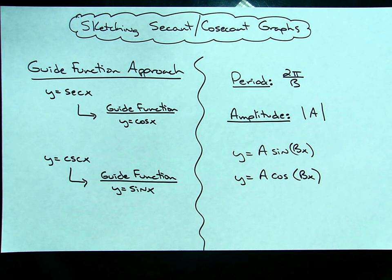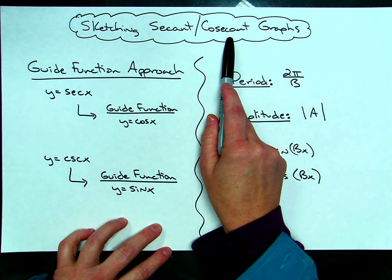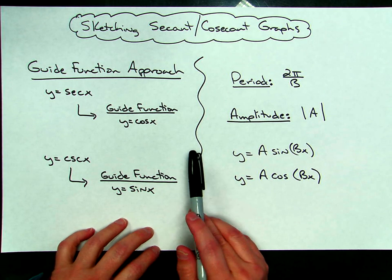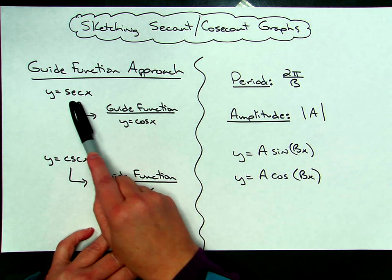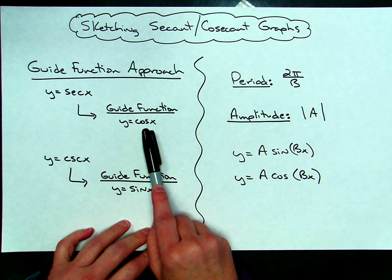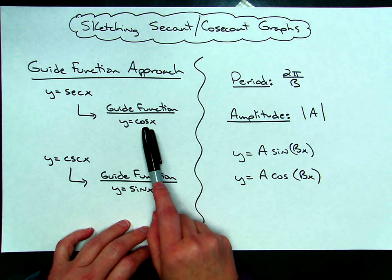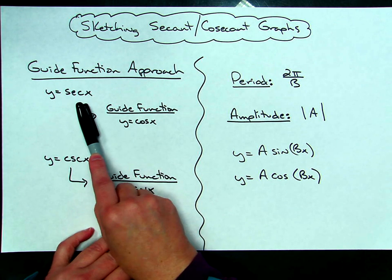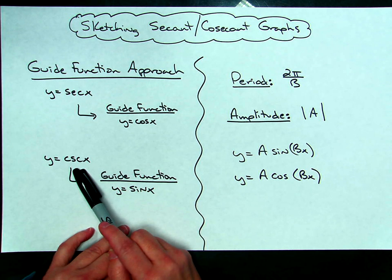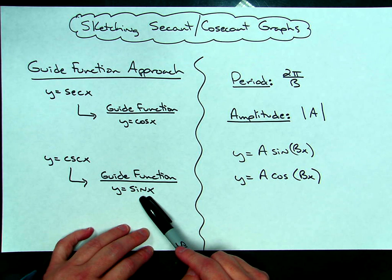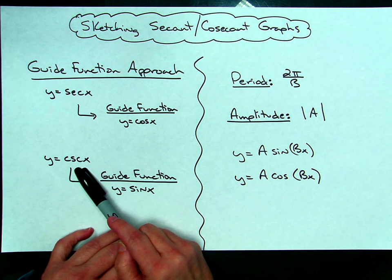Today we're going to take a look at how we're going to go about sketching our secant and cosecant graphs. We're going to use a guide function approach, which basically means that for a secant graph, we are going to sketch a cosine graph, put it on our sketch with a dotted line, and then use that as our guide for where we place our secant function. Same thing with cosecant — our guide function for a cosecant function is going to be sine, so we'll put our sine graph on and then use that as a guide to show us where to put our cosecant.